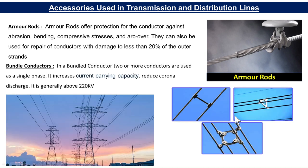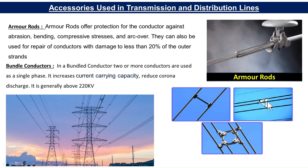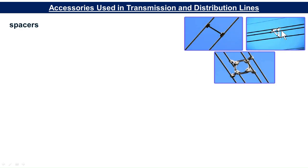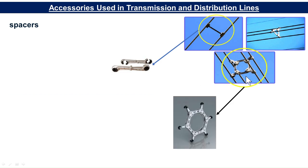Then there are bundled conductors. In a bundled conductor, two or more conductors are used as a single phase. It increases the current-carrying capacity and reduces corona discharge. Bundled conductors are generally used above 220 kV. As you can see from this transmission tower, three conductors are used as a single phase. The conductors are separated by a structure called spacers, which maintain the spacing between conductors in the bundle.